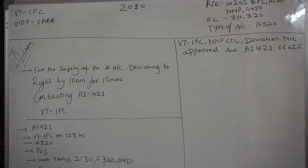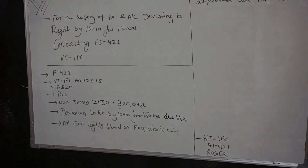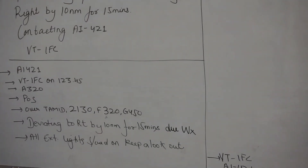I contact Air India 421 because they are the traffic nearby my position obstructing my deviation. The call goes: Air India 421, Victor Tango Foxtrot India Foxtrot Charlie on 123.45 — the inter-pilot frequency. Aircraft type Airbus 320, position over TAMID at 2130, flight level 320, route Golf 450, deviating to right by ten nautical miles for fifteen minutes due weather. All exterior lights switched on, keep a lookout.